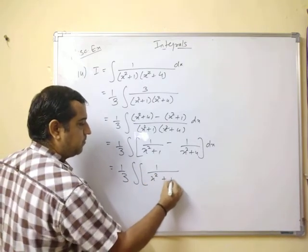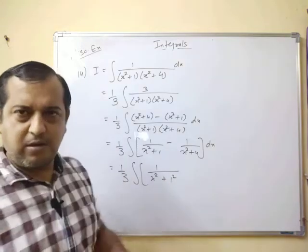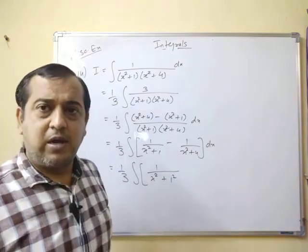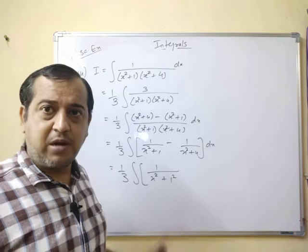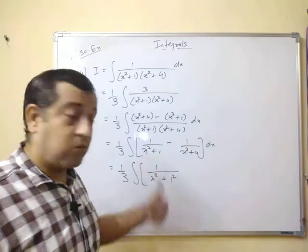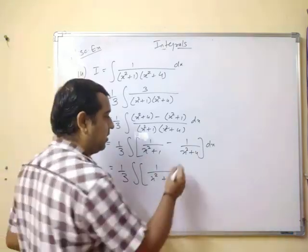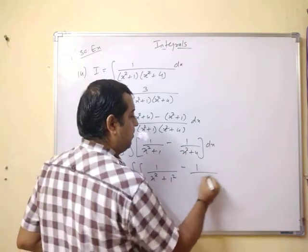Now this is 1 by 3 integral. Students have a mindset that in case of partial fraction, every time we will get answer in log terms. No. Here x square is given, so log will not come. Keep that in mind. Something else can also come.